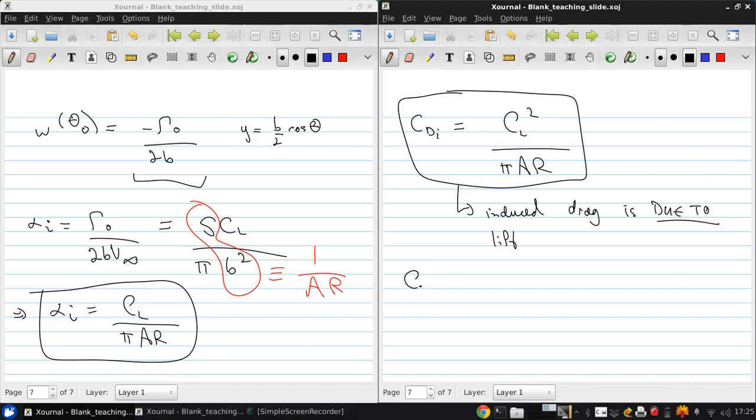We also see that CDI is proportional to 1 over AR, the aspect ratio. So we want a high aspect ratio to have low induced drag.